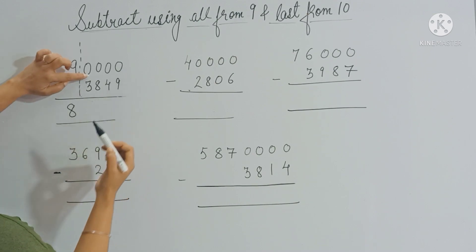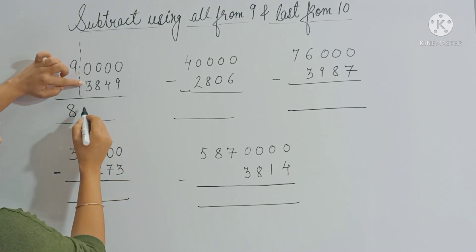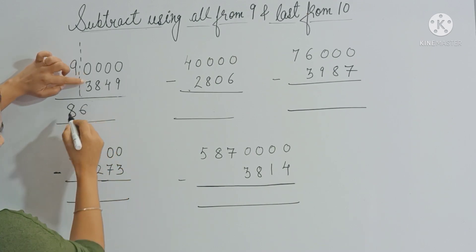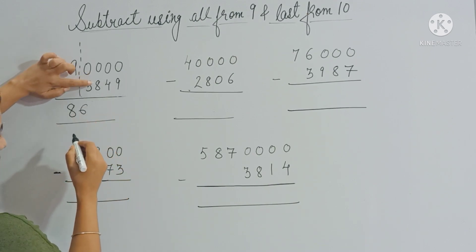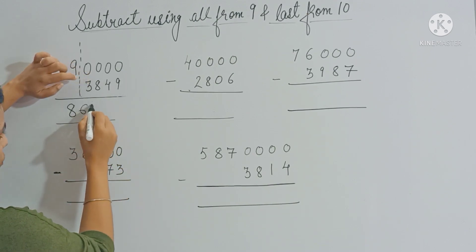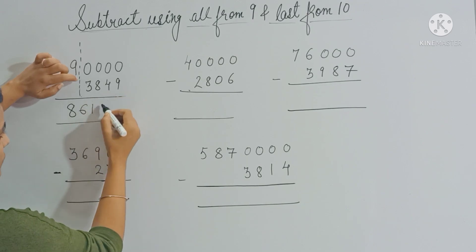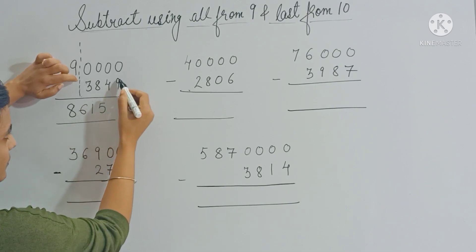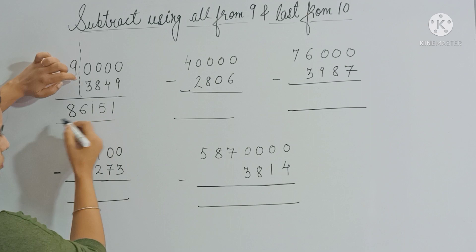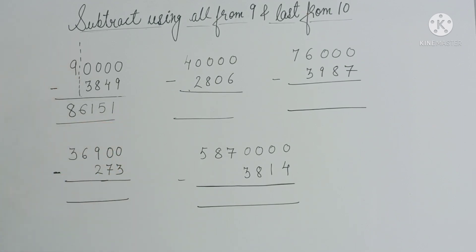That means you subtract all these digits from 9 and only the last digit from 10. So 9 minus 3 gives you 6, 9 minus 8 gives you 1, 9 minus 4 gives you 5, and 10 minus 9 gives you 1. So this is your answer.